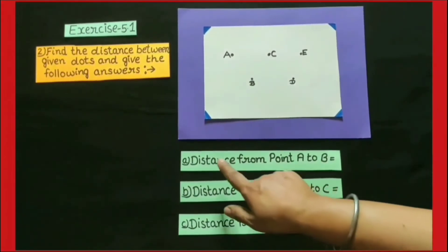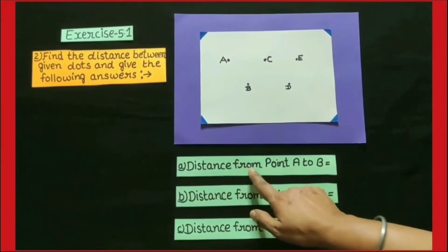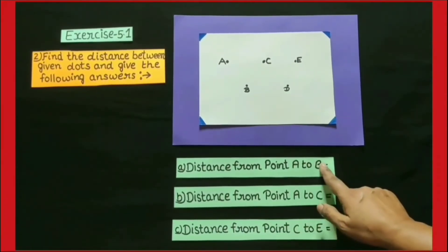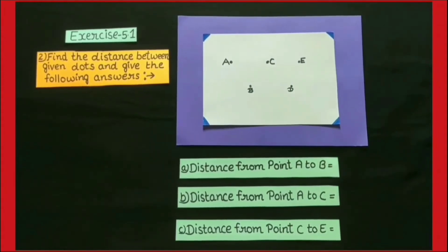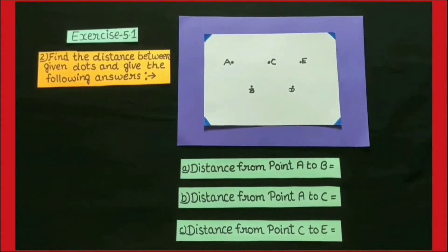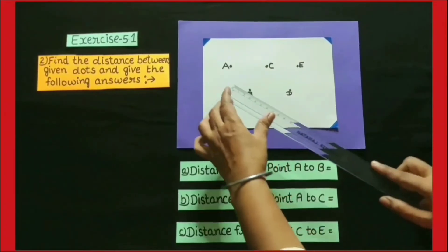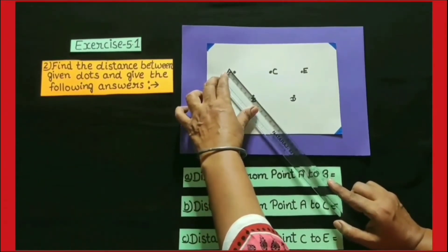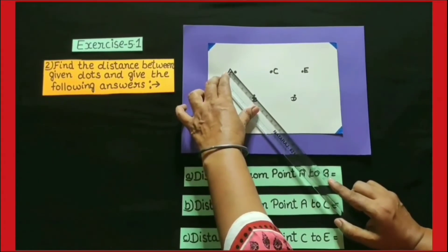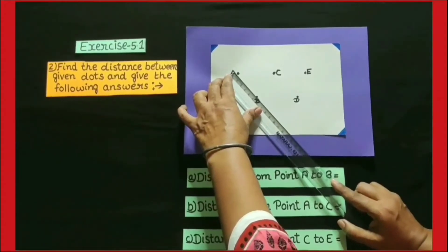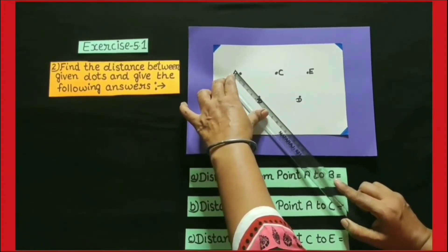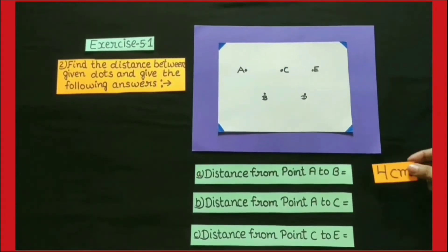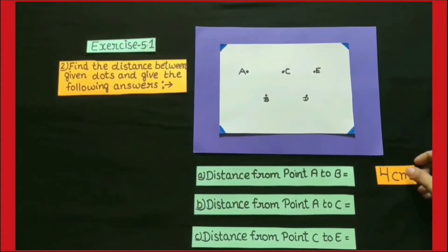The first question is: distance from point A to B. In this question, we have to find out the distance between A to B, and we find this distance by measuring it with a scale. Its distance is 4 cm. So, the answer to the first question is 4 cm.